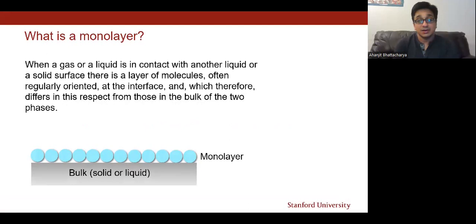Before we get into the details of the technique, let's first try to understand what a monolayer is. Simply put, a monolayer of a substance is a well-oriented, one-molecule-thick layer of that substance at a solid-liquid or liquid-gas interface. We must keep in mind that the behavior of matter is very different at the interfaces as compared to the bulk, because of the forces that are unique to the interfacial region.